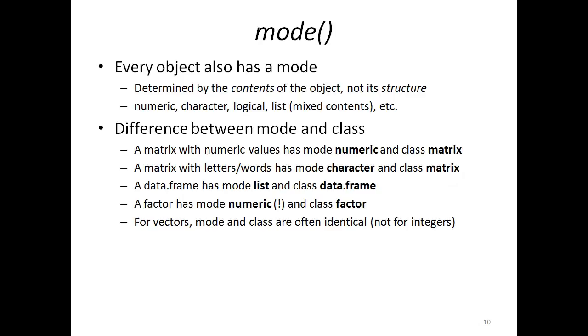If you have a matrix, for example, filled with numeric values, this matrix will get the mode numeric while the class is still matrix because the data structure is matrix. While a matrix containing character strings will get mode character and class matrix.